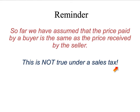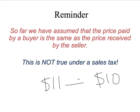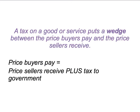In our example the price that the buyer paid was eleven dollars and the price the seller received was ten dollars. The difference between the price the buyer pays and the price the seller receives was the one dollar of tax taken by the government. Our new assumption is that the price the buyer pays is equal to the price the seller receives plus the tax to the government.